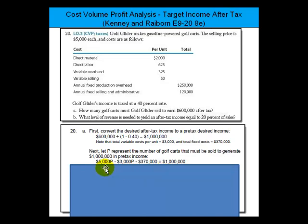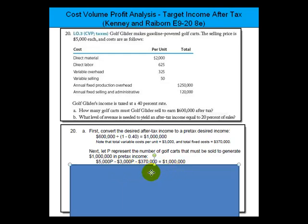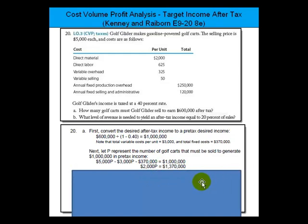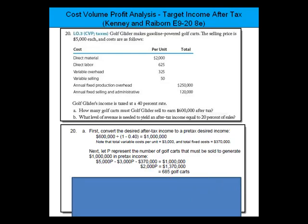So what we're saying is: $5,000 of sales times however many units we sell, minus $3,000 variable costs times that same number of units, minus $370,000 should equal $1,000,000. Solving for P: 5,000P minus 3,000P gives us 2,000P, and moving 370,000 to the other side gives 2,000P = 1,370,000. Dividing both sides by 2,000, P equals 685 golf carts. That's Part A.